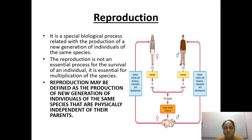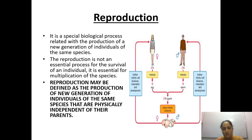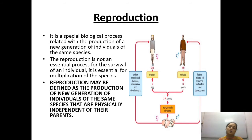This process, although not required for a particular organism's survival, is necessary for the survival of the species. It is a special biological process related to the production of a new generation of individuals of the same species — it may be the species of the dog, cat, rat, or mammal. All these are particularly different species, so to continue the species, they must reproduce.